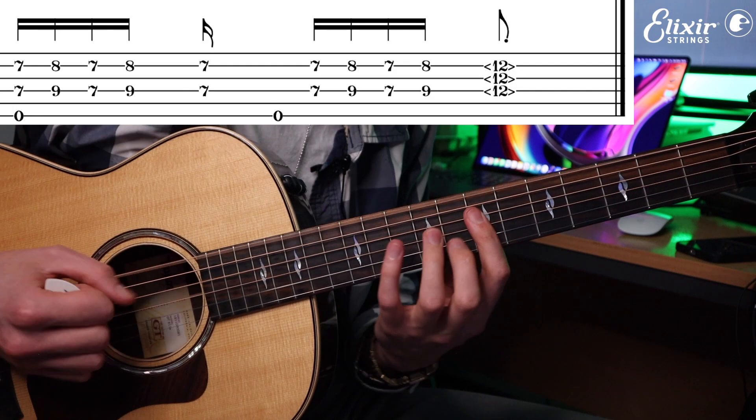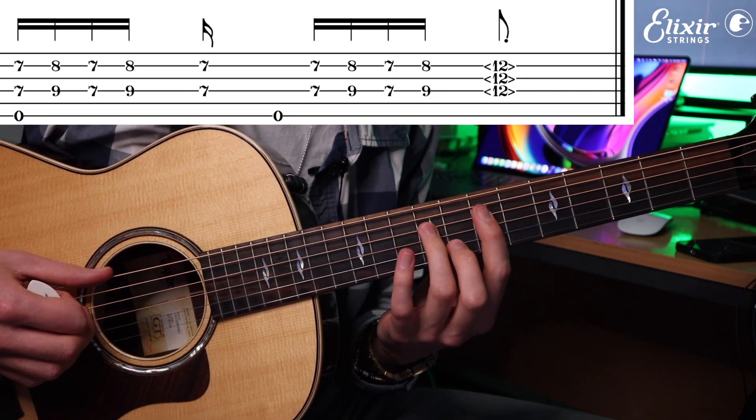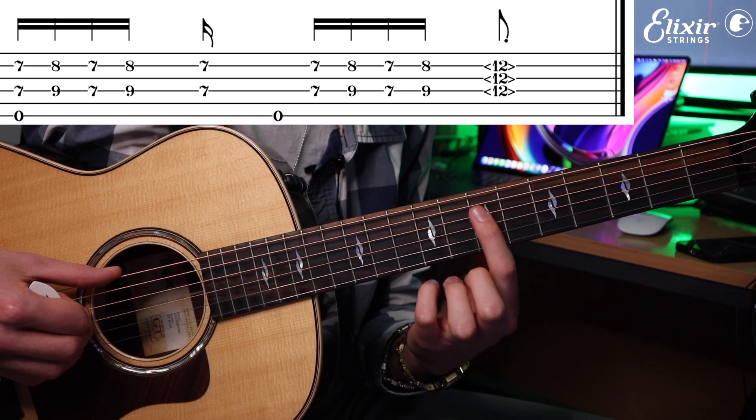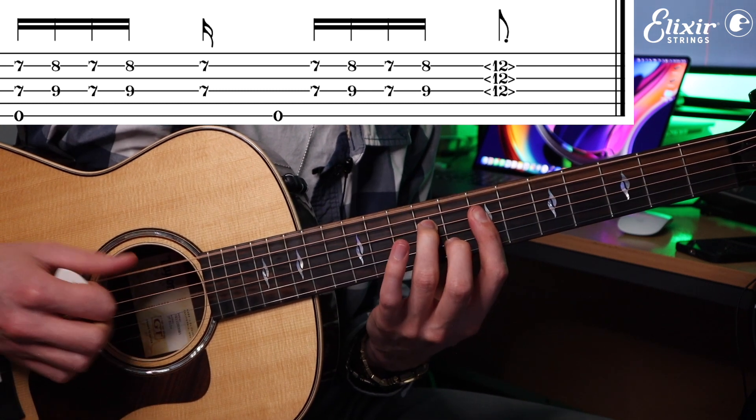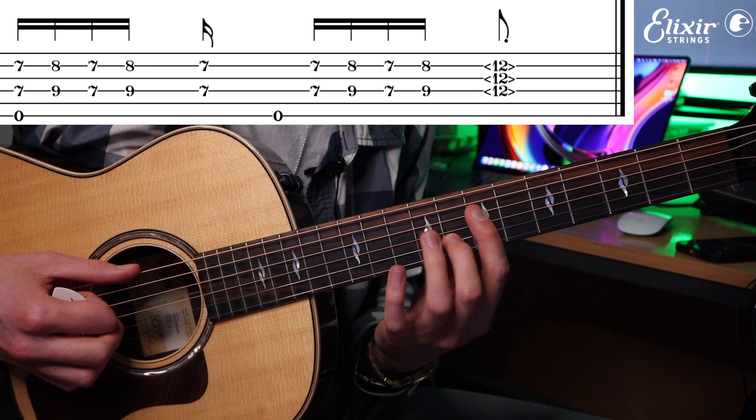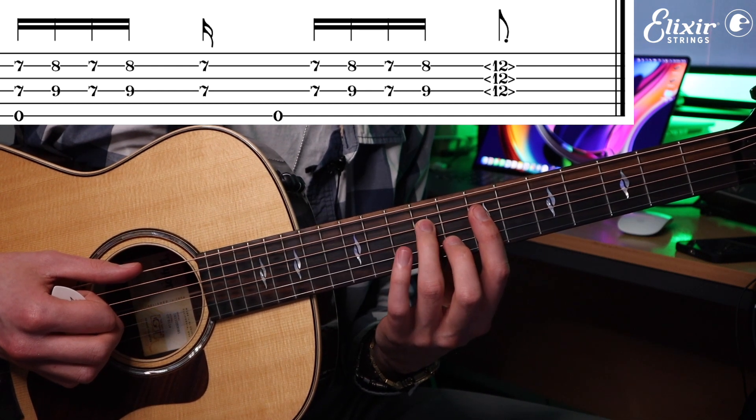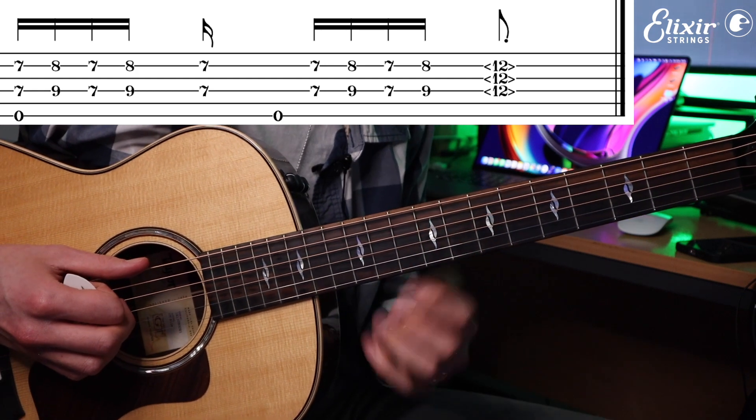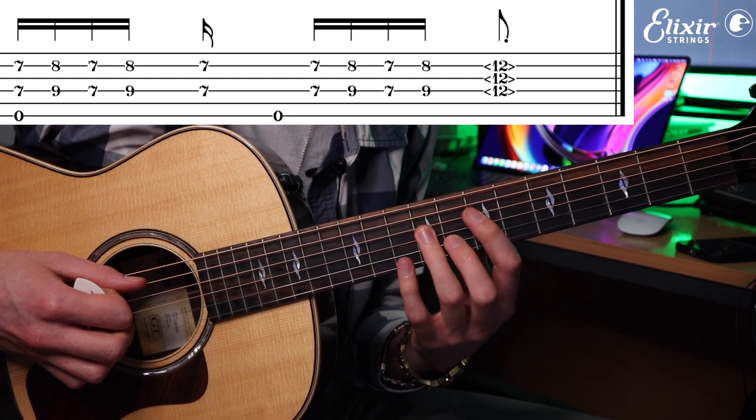Then that's followed by an open E with our first finger barring the seventh fret of the D, G, and B. And then we're going to hammer on with our second finger to the eighth fret of the B, third finger to the ninth fret of the D string, pull it off and back on twice. Backbeat.